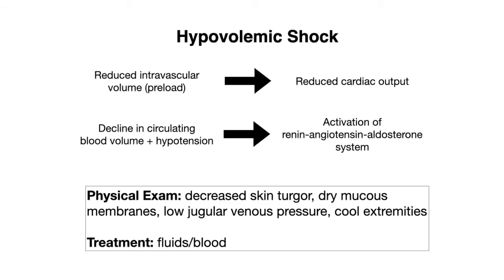Let's start with our first type of shock: hypovolemic shock. This is when you have reduced preload as a result of many different things, such as gastrointestinal bleeds, refractory vomiting or diarrhea, or extensive burns. As a result of this reduced preload, you also have a reduction in cardiac output, which leads to a decline in circulating blood volume and hypotension. This triggers activation of the renin-angiotensin-aldosterone system to compensate for the decrease in perfusion.